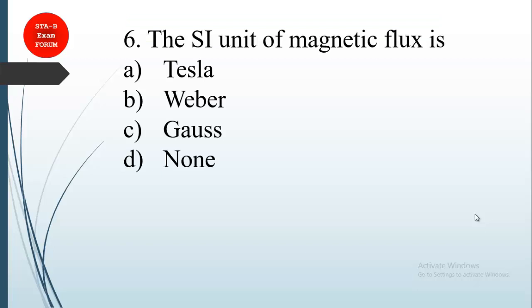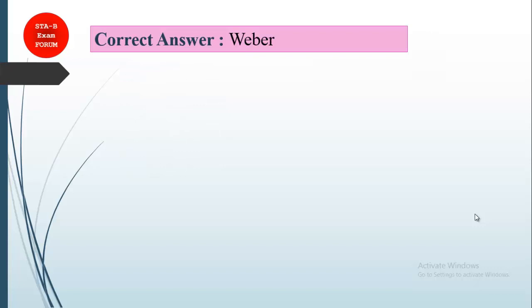This is similar to the previous one. They might have asked in different sessions or shifts. The correct question is: the SI unit of magnetic flux. I already told you the correct answer is Weber. Weber is a unit of magnetic flux.